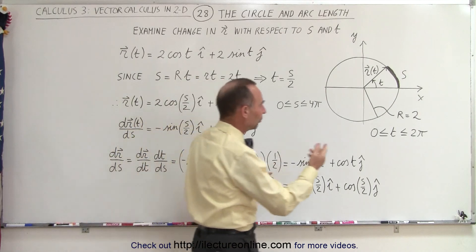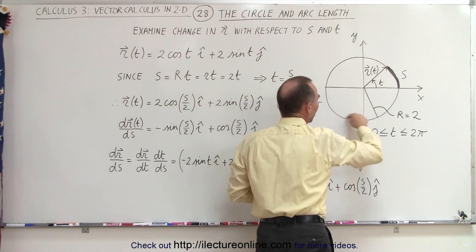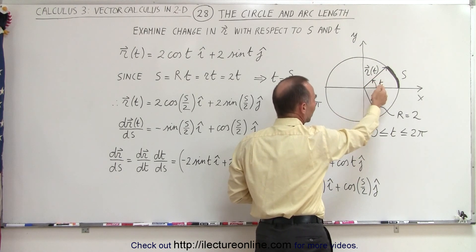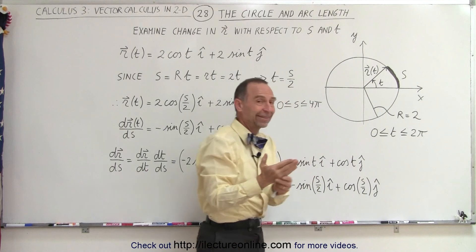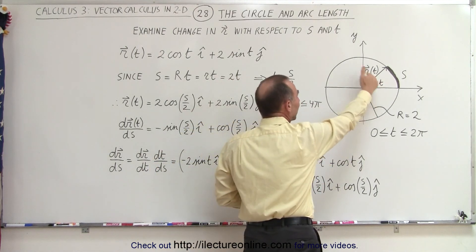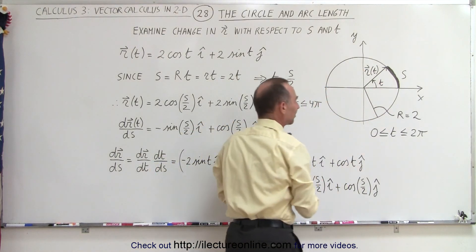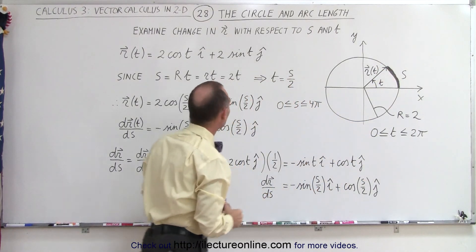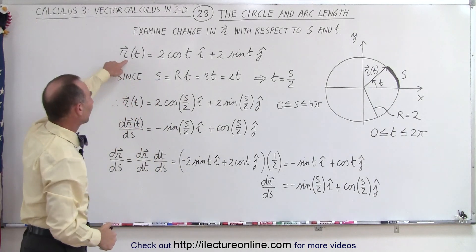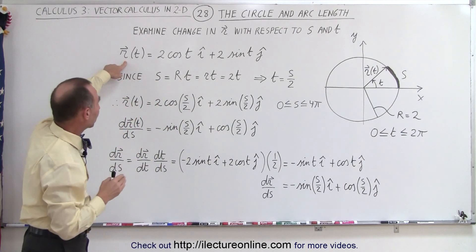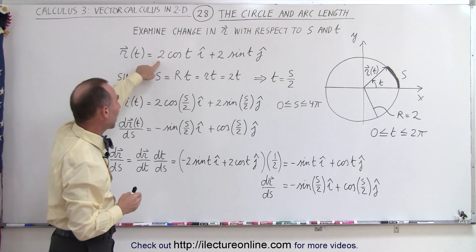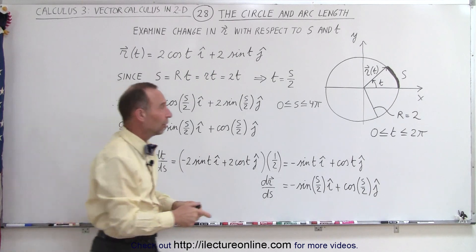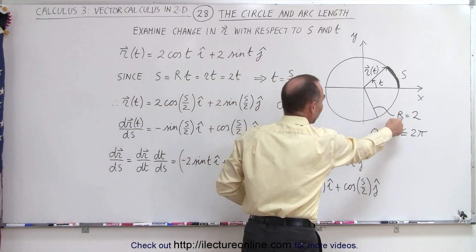First of all, we understand that the position vector will point to any point on the circle, so we define it as r as a function of t, t being the parametric variable — in this case, the angle in radians relative to the positive x-axis. The position vector equation can be defined as 2 times the cosine of t in the i direction plus 2 times the sine of t in the j direction, because the radius of the circle is equal to 2.